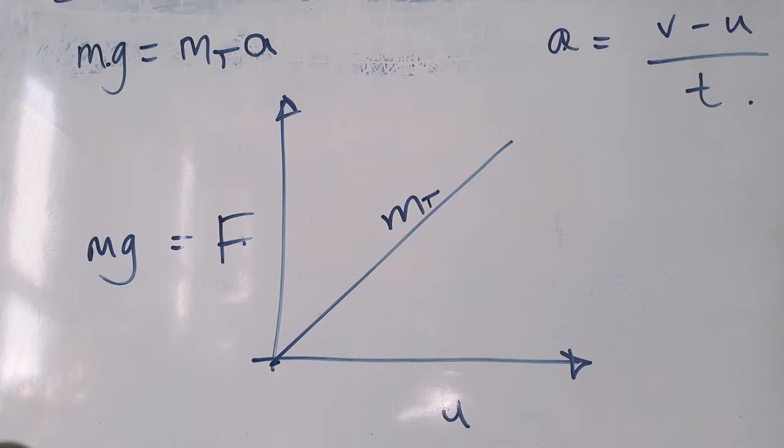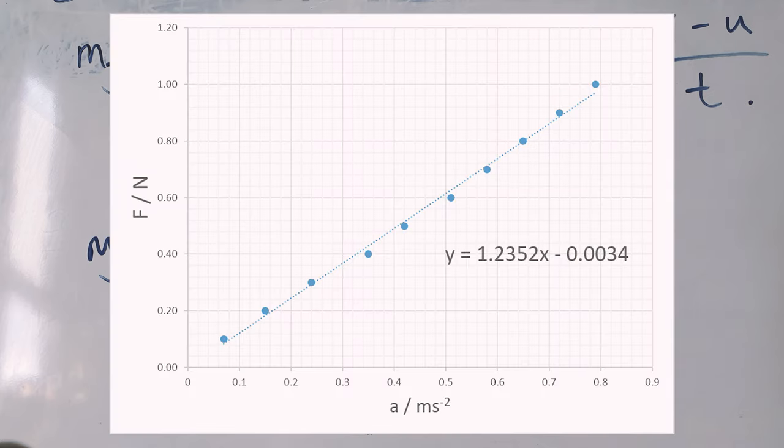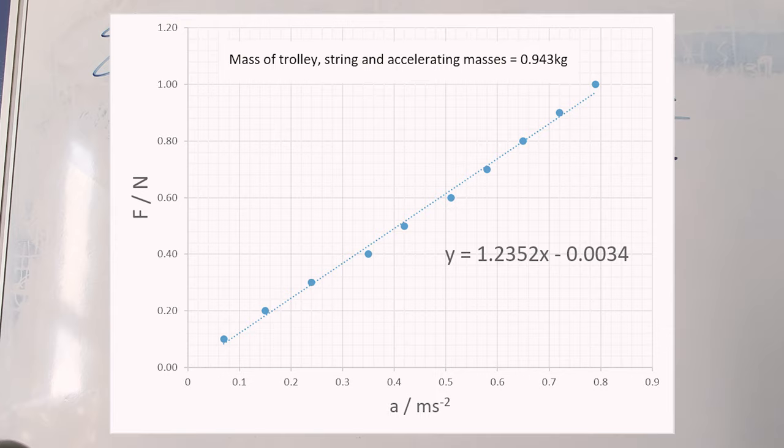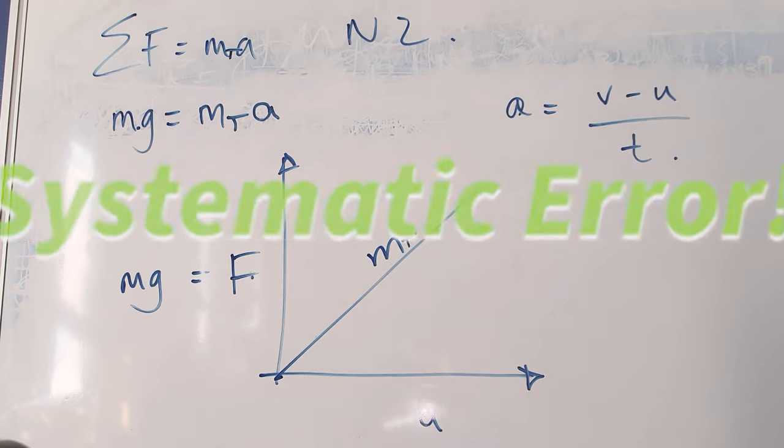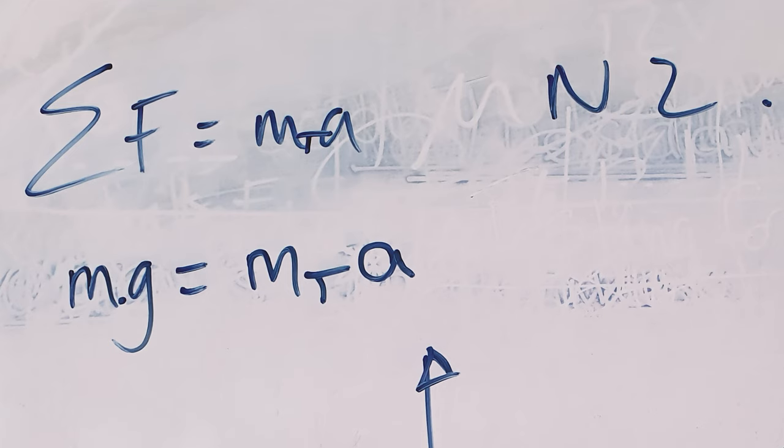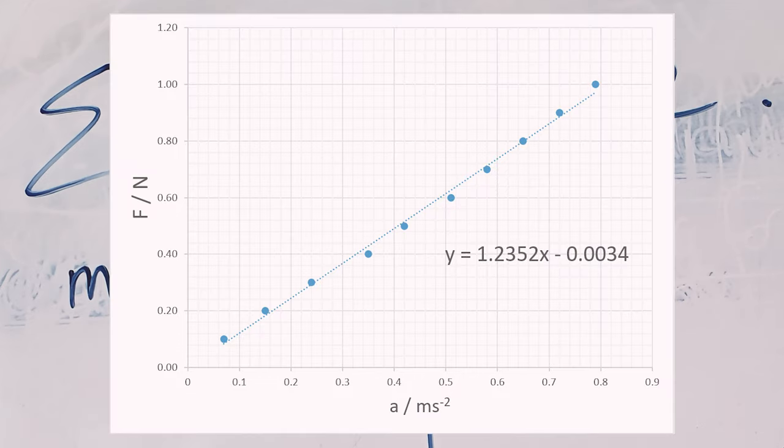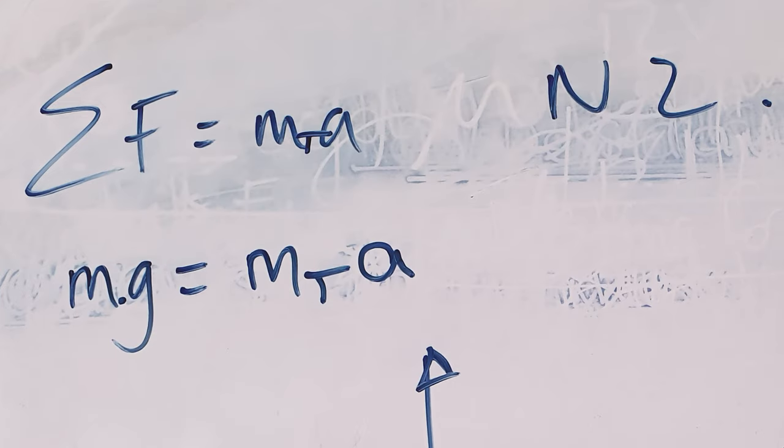Now when we do this experiment, most of the time the mass given by the gradient comes out slightly higher than the mass if you weigh the whole thing on a balance. And that's because there is still some frictional forces, even though we've reduced them by using an air track. The experiment does, however, yield pretty precise results, and you get a really nice straight line. And you can therefore show that resultant force is indeed proportional to acceleration.